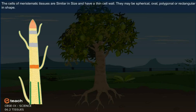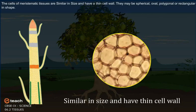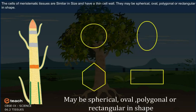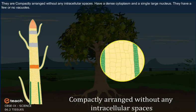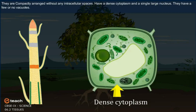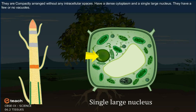The cells of meristematic tissues are similar in size and have thin cell walls. They may be spherical, oval, polygonal, or rectangular in shape. They are compactly arranged without any intracellular spaces, with dense cytoplasm, a single large nucleus, and few or no vacuoles.